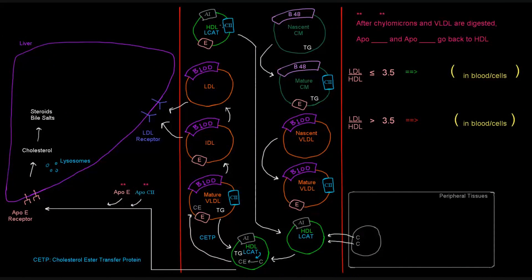So let's start up here at the top where we have HDL. It's got A1, C2, and E all attached to it. It's got LCAT in there. And we said that it exchanges the apoproteins with other lipoprotein particles, including the chylomicrons and VLDLs. So it's going to give C2 and E to both the chylomicrons to allow that to mature, and it also gives it to the VLDL to allow that to mature. When it does that, it ends up having just the A1 down here on the right.